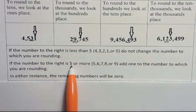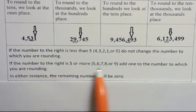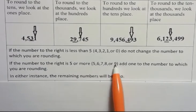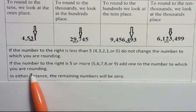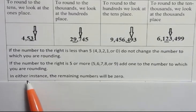If the number to the right is 5 or more, that is 5, 6, 7, 8, or 9, add one to the number to which you are rounding. In either instance, the remaining numbers or the trailing numbers should be 0.